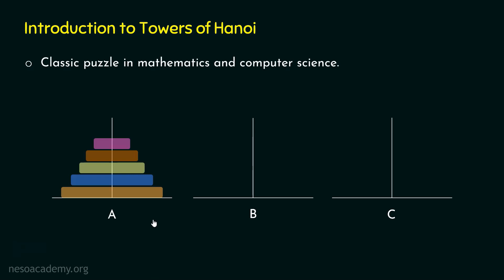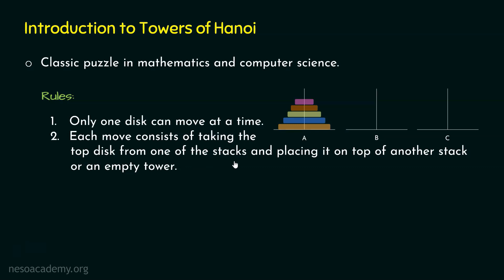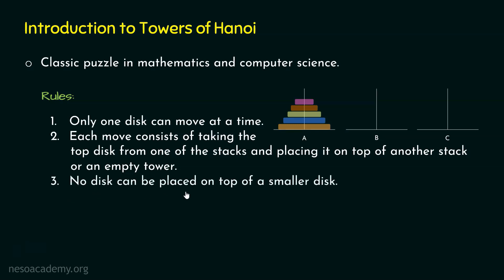And to that point, the world will come to an end. Here are the rules. Rule one: only one disc can move at a time — we are not allowed to move multiple discs at a time. Rule two: each move consists of taking the top disc from one of the stacks and placing it on top of another stack or an empty tower — one move equals one disc move. Rule three: no disc can be placed on top of a smaller disc.